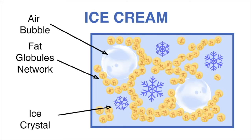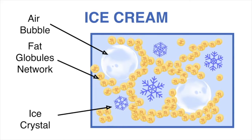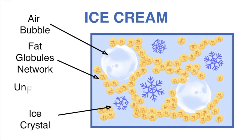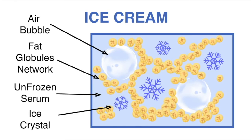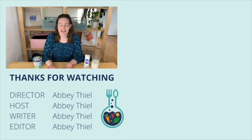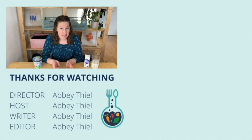If you're wondering what holds together all these air bubbles, fat globules, and ice crystals, that is the last part of ice cream we haven't talked about yet — the serum phase. This is basically an unfrozen liquid phase, because not everything in ice cream actually freezes. It is this liquid phase that tends to surround all the other components: the fat globules, the crystals, everything we talked about. Let me know if you enjoyed this dive into food structure, and if there are any foods you're curious about, leave a comment and that could be my next video.